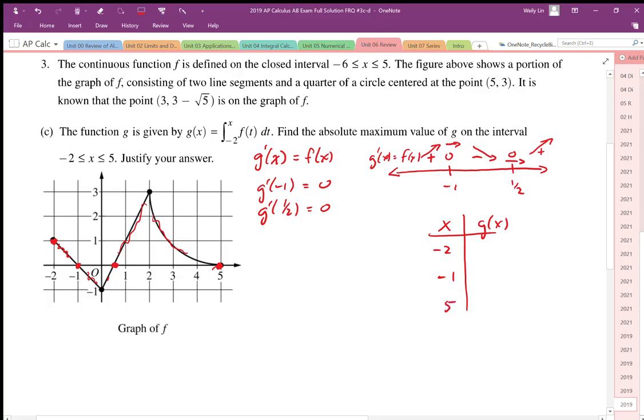Okay so if we take a look at g of negative 2 is going to be equal to the area from negative 2 to negative 2, well that area is going to be 0.